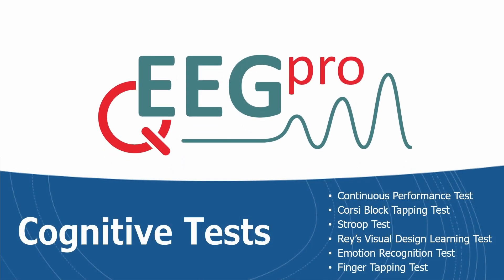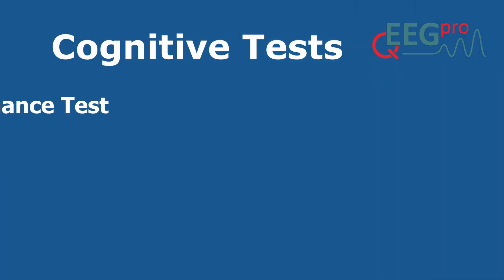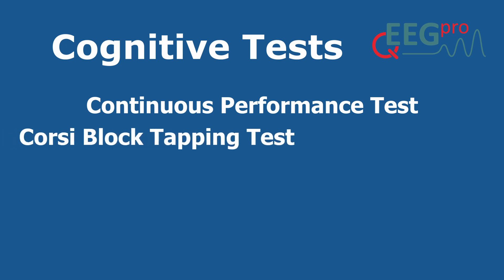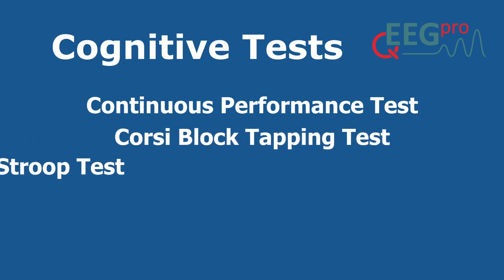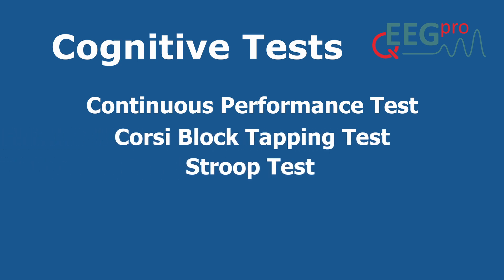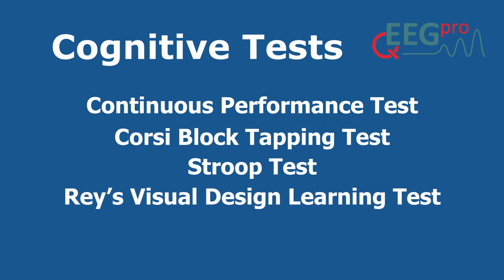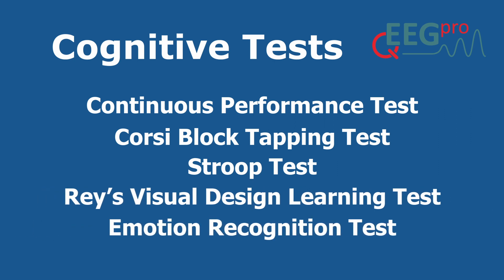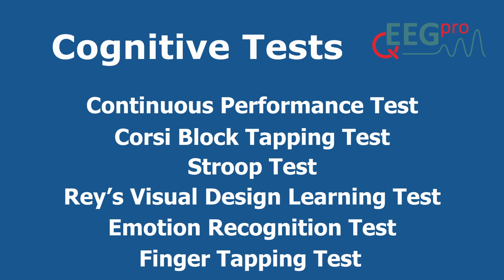In this video we will go over the neuropsychological tests which are available if you have purchased a Psychological Assessment subscription. The following tests are available: the Continuous Performance Test, the Corsi Block Tapping Test, the Stroop Test, Ray's Visual Design Learning Test, the Emotion Recognition Test, and the Finger Tapping Test.